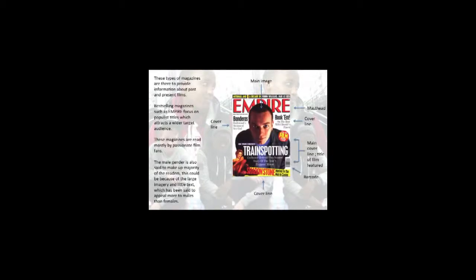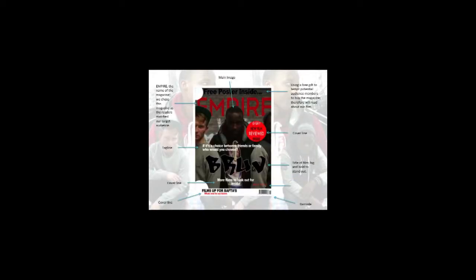By analysing a film magazine cover which was advertising a film of the same genre as ours, we were able to design our own magazine cover following the correct conventions. These types of magazines provide information about past and present films. Best-selling magazines such as Empire focus on populist titles which attract a wider target audience. These magazines are read mostly by passionate film fans, and the male gender makes up the majority of readers, possibly because of large imagery and little text, which has been said to appeal more to males than females.